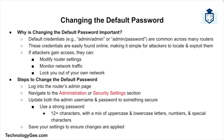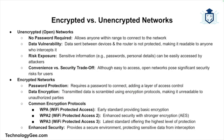To change the default password, log into your router's admin page and go to the Administration or Security section. Change both the admin username and password to something more secure — create a strong password that includes a mix of uppercase and lowercase letters, numbers, and special characters, and it should be at least 12 characters long. Save your settings to ensure your router's configuration is protected against unauthorized access.